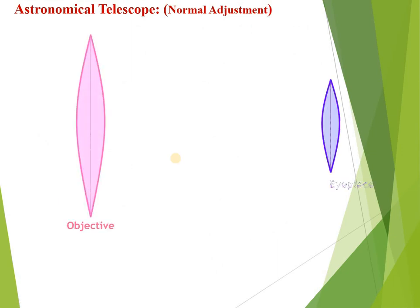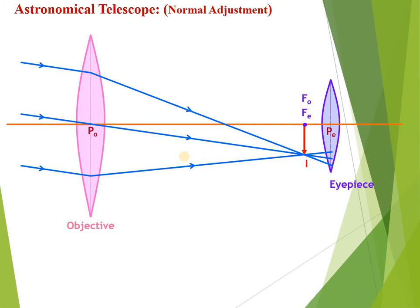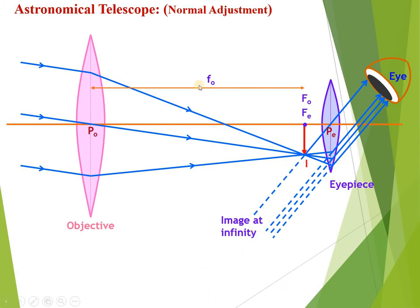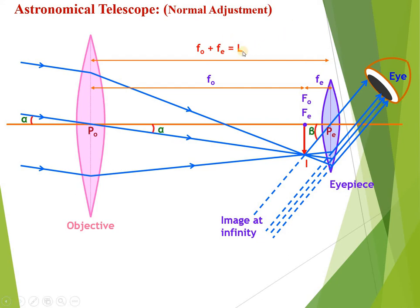Let us now derive the magnifying power of the telescope in normal adjustment. Light rays coming from infinity meet at the focus fo of the objective lens. Let fe be the focus of the eyepiece lens. Since the final image is forming at infinity, the length of the telescope tube — the separation between the lenses — equals fo plus fe in normal adjustment. Alpha is the angle subtended by the object at the objective and beta is the angle subtended by the image at the eye.